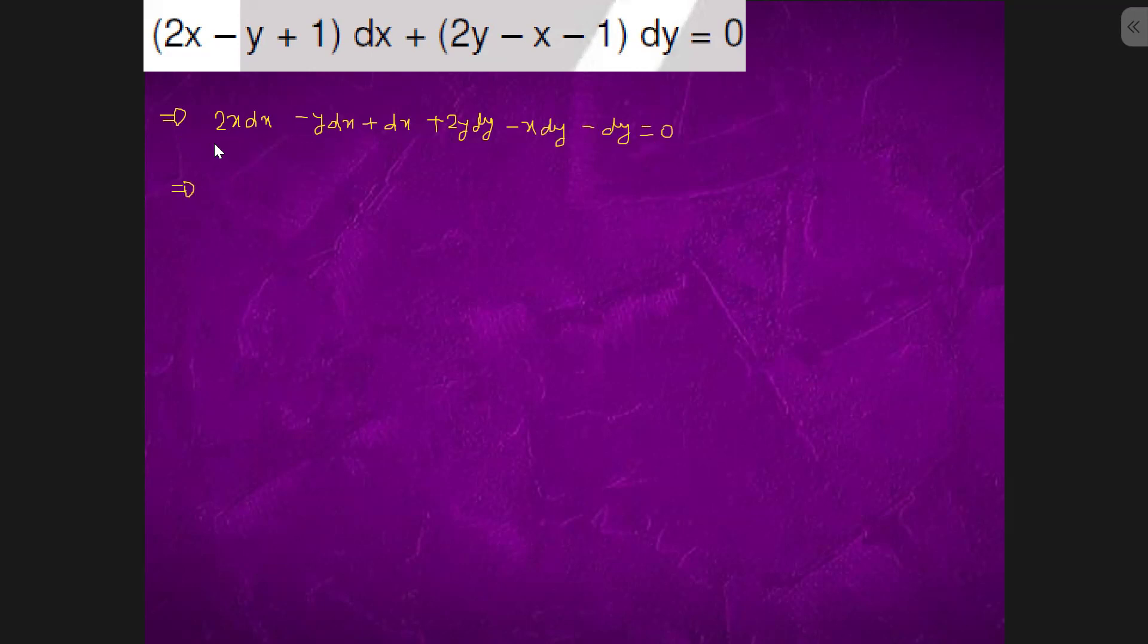If we take these terms and group them on the same side, we have 2x dx plus dx and we have minus d of yx. We have dy minus 2y dy.